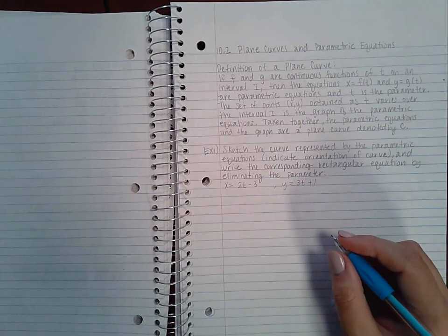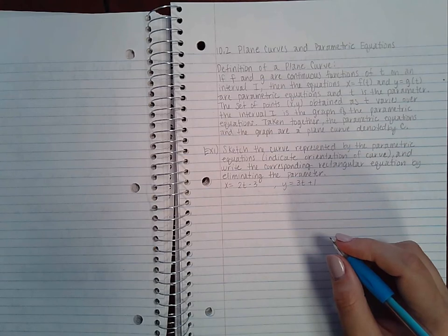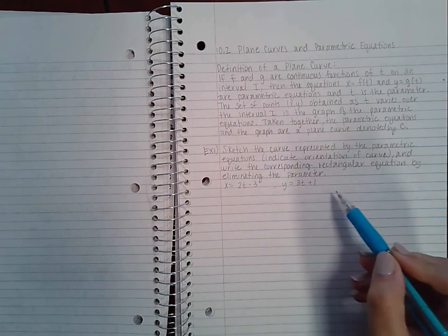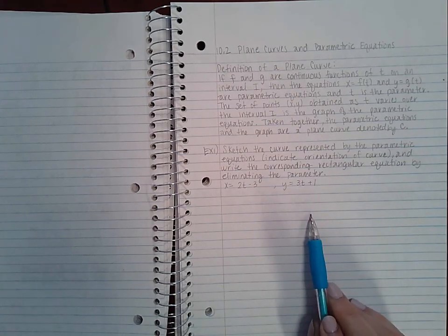To indicate what's called the orientation, you use arrows to show which way the curve is moving. As time goes, I may be going to the right, or I start here and as time passes I'm going to the left. You have to show arrows to indicate that movement. This problem is: sketch the